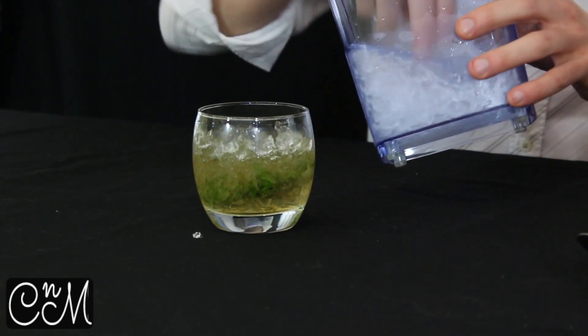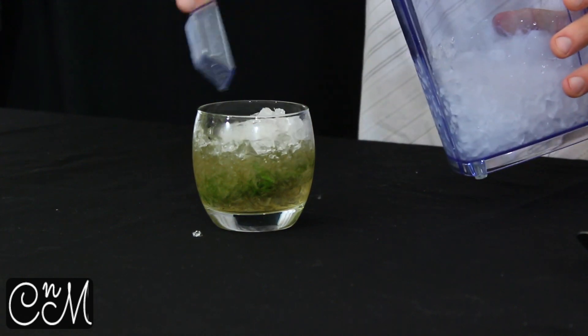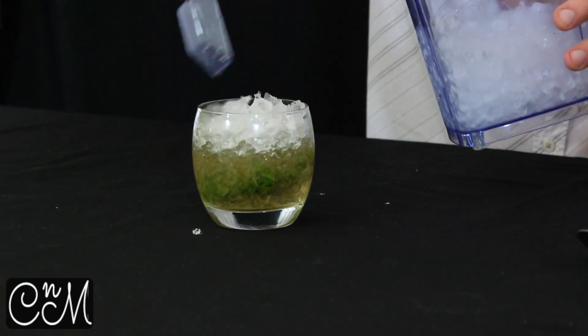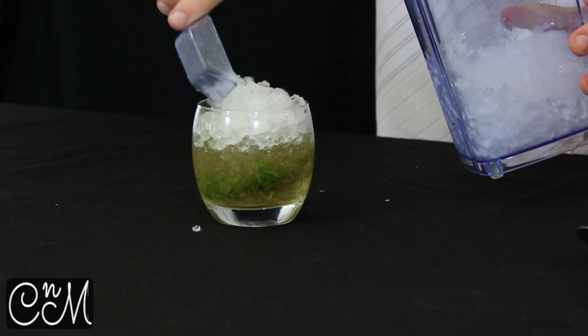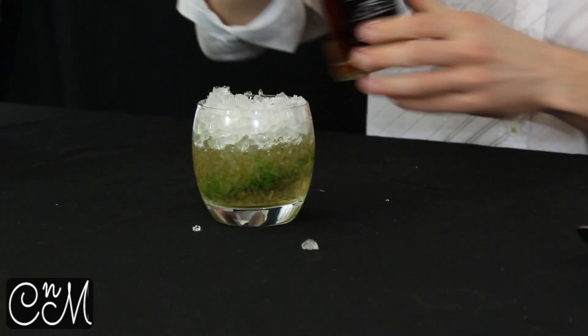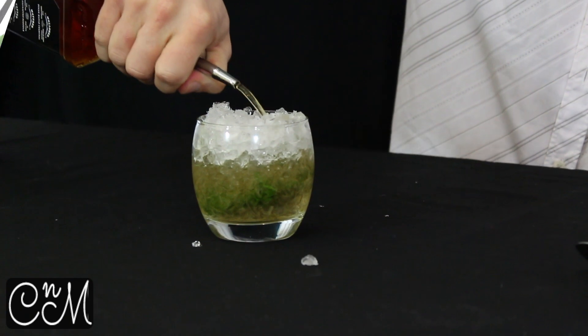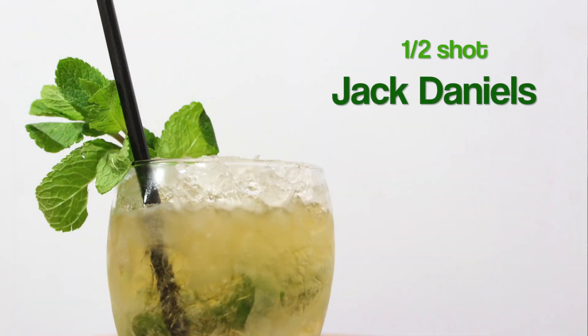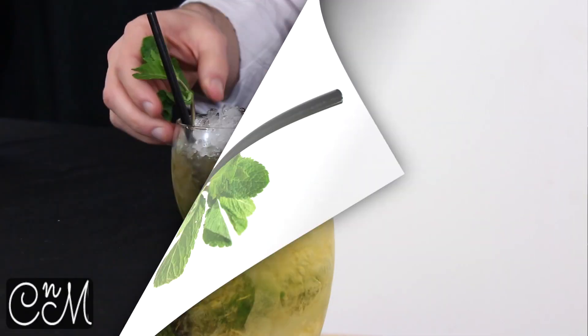Then we're going to fill up with ice all the way to the top. And then lastly, just fill up the rest of the glass about another half shot of Jack Daniels. Then just to garnish it off we're just going to put a mint sprig in as well.